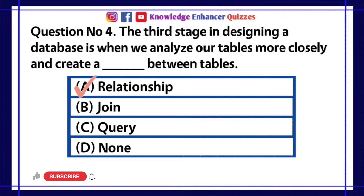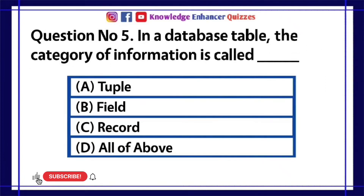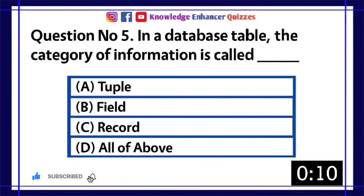Question number five: In a database table, the category of information is called blank. A) Tuple, B) Field, C) Record, D) All of the above.